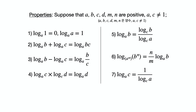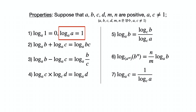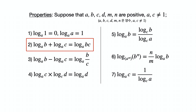Suppose a, b, c, d, m, and n are positive real numbers where a and c are not equal to 1. The properties of log are as follows. Property 1: log base a of 1 is always 0, because any non-zero number to the 0 power is 1. And log base a of a is always 1, because any number to the power of 1 is itself. Property 2: log base a of b plus log base a of c equals log base a of bc.